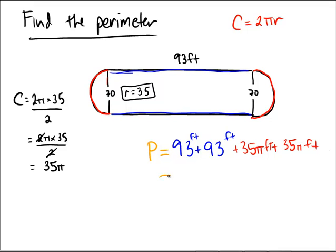So what's my final answer going to be? I'm just going to take a calculator out very quickly here. And using that calculator, I'm going to go 93 plus 93 plus 35 times 3.14 plus 35 times 3.14. And I should be getting an answer. It appears that I'm getting an answer of 405.8, and the units are feet.